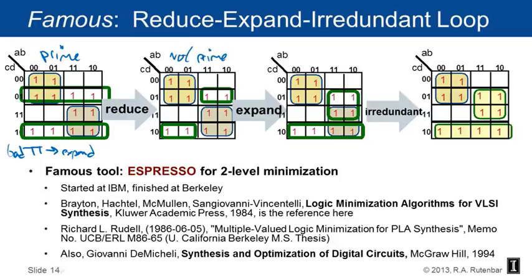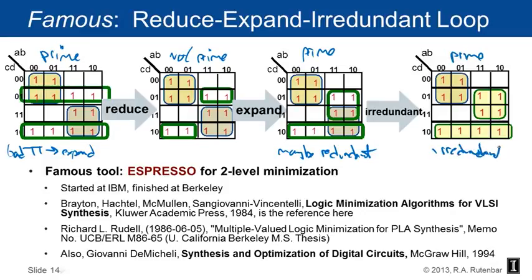You run reduce, which gives something that is not prime. Then you run expand, giving something that is prime but may be redundant — you hope it's redundant because you're trying to eliminate cubes. Then you run irredundant to get something prime and irredundant. Then you go back and reduce again, getting a different shape that lets you escape a local minimum. You keep running reduce-expand-irredundant until it stops getting better.